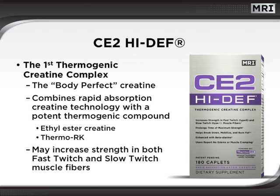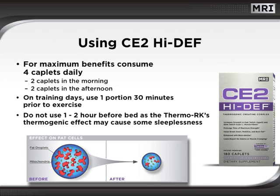CE2 High-Def was the very first thermogenic creatine complex. This is a body-perfect creatine that combines rapid absorption technology with a potent thermogenic compound called Thermo-RK. The Thermo-RK is a unique compound that helps to break down, mobilize, and burn fat without the harsh stimulation experienced with other thermogenic compounds. The combination of ethylester creatine and Thermo-RK may help to increase strength in both fast-twitch and slow-twitch muscle fibers. For maximum benefits, consume 4 caplets of CE2 High-Def daily — 2 caplets in the morning and 2 in the afternoon. On training days, use 1 portion 30 minutes prior to exercise. It may be best to avoid CE2 High-Def within 1-2 hours before bed, as Thermo-RK's thermogenic effect may cause sleeplessness with some individuals.